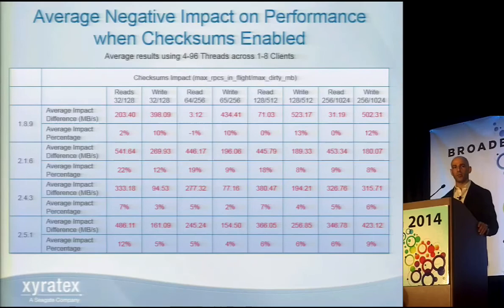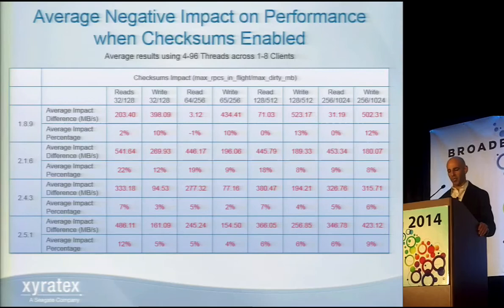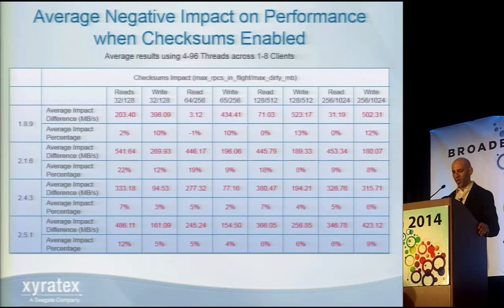On 1.8.9, the checksum impact was negligible — about 2% for reads or writes. With 2.1.6 it was a little higher, around 22% at 32 max RPCs in flight, but as low as 10% on reads. Very encouraging on 2.4.3 and 2.5.1 — the checksum impact was within 5–6% on average. Not as large an impact for checksums enabled on 2.4.3 and 2.5.1 clients.